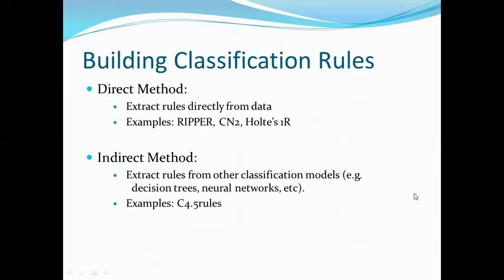To build classification rules, there are two important methods. The direct method: rules are derived directly from the training set. The indirect method: rules are extracted from other classification methods such as decision trees.